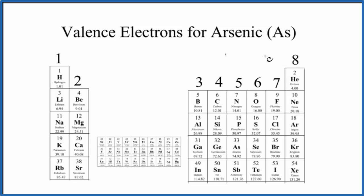We're going to find arsenic here, and arsenic is right here in group 15, sometimes called 5A. So it has five valence electrons.